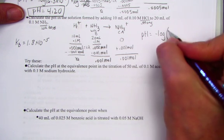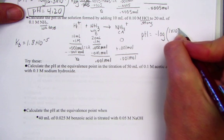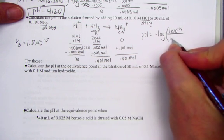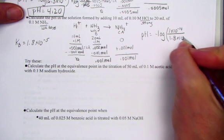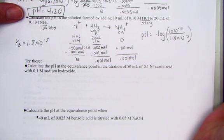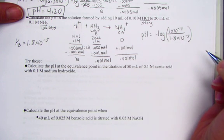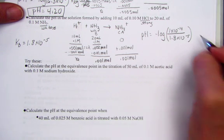So I simply take the ion product constant for water, 1 times 10 to the negative 14th, and place it over the Kb value of 1.8 times 10 to the negative 5. Kw over Kb inside of this parentheses does indeed flip it to a Ka constant.